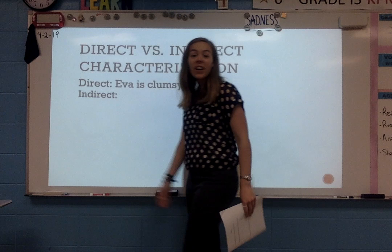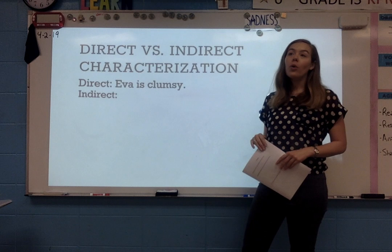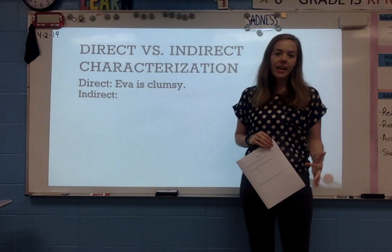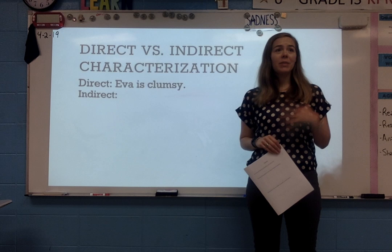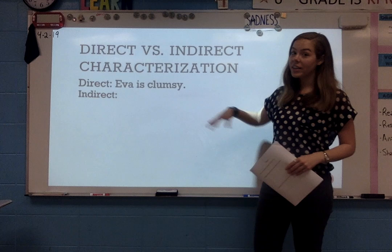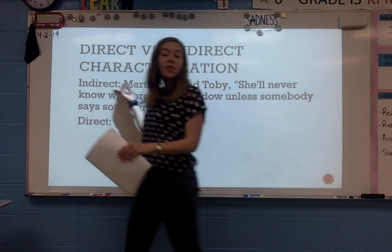I could say, 'Eva is clumsy' — that's direct; I could give you a direct quote. Or I could say, 'Eva said ouch as she banged her leg into the desk, adding to the collection of bruises already on her leg.' So I could assume she must have bumped her leg a lot of times to have all those bruises — she probably is really clumsy. I'm making an indirect characterization in that case.